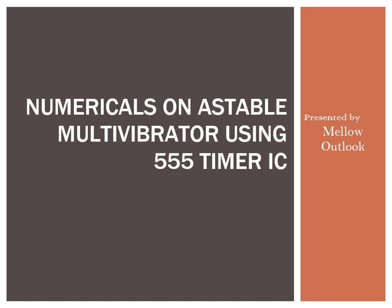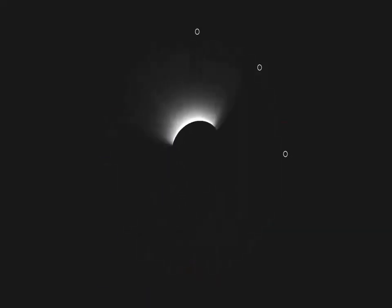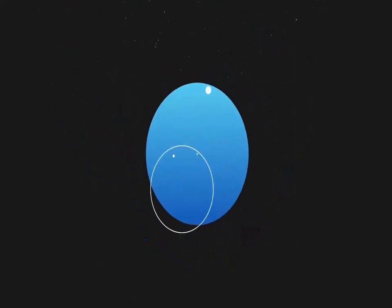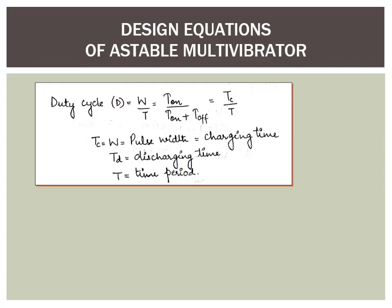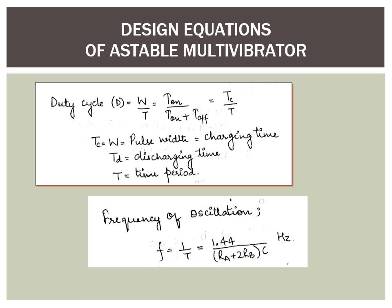Numericals on the astable multivibrator using 555 timer IC. Before we begin, let us look into the design equations. The duty cycle of the astable multivibrator is given by W by T, which is equal to the on time divided by the total time period. Tc is the charging time, Td corresponds to the discharging time, and T is the time period, which is the sum of the charging time and the discharging time.